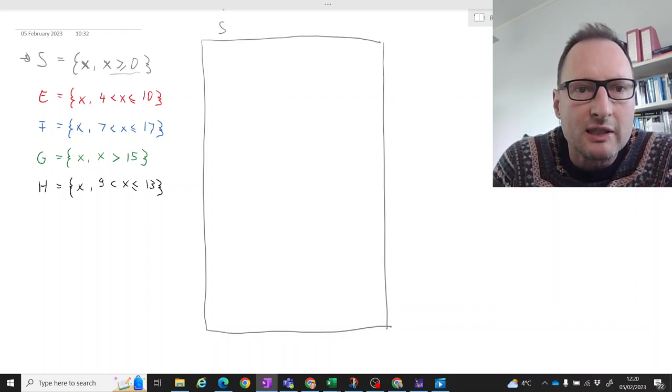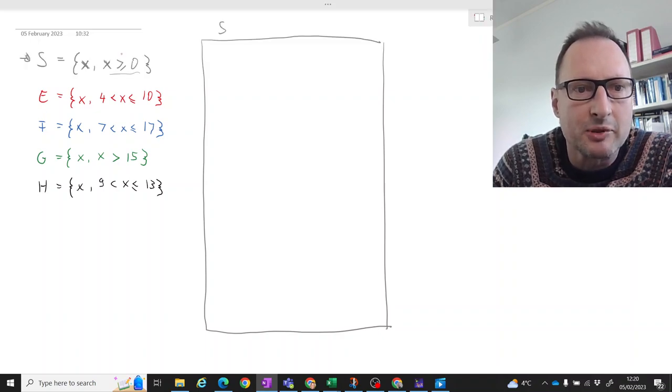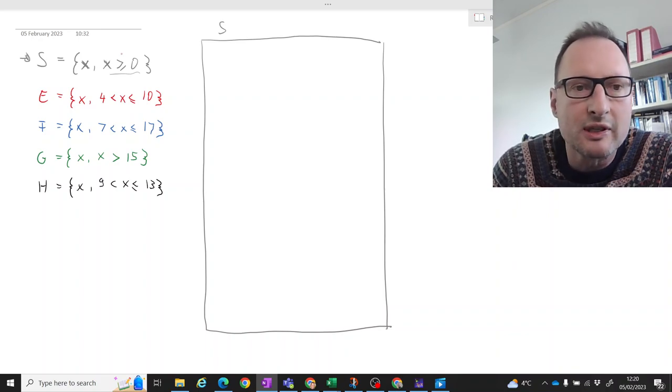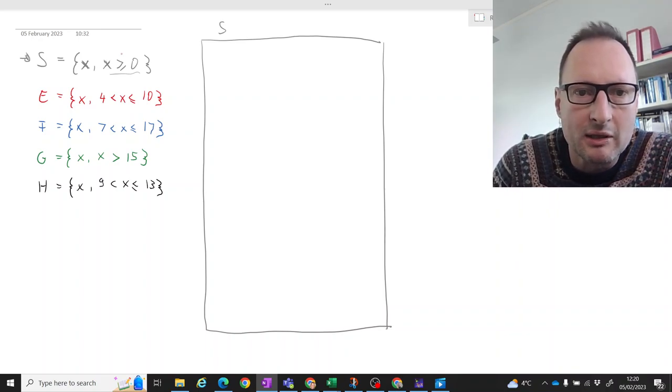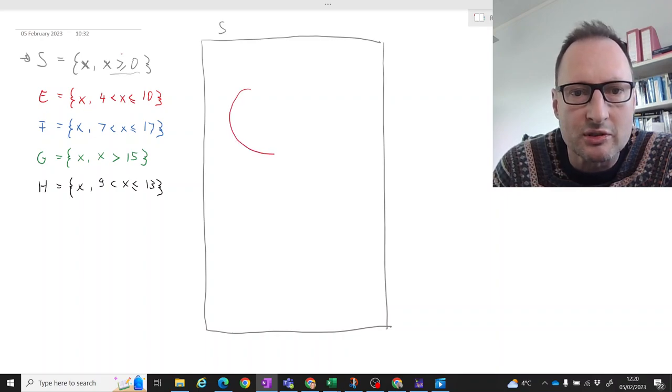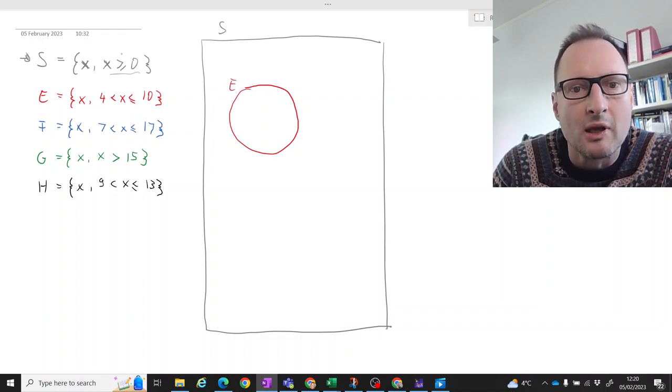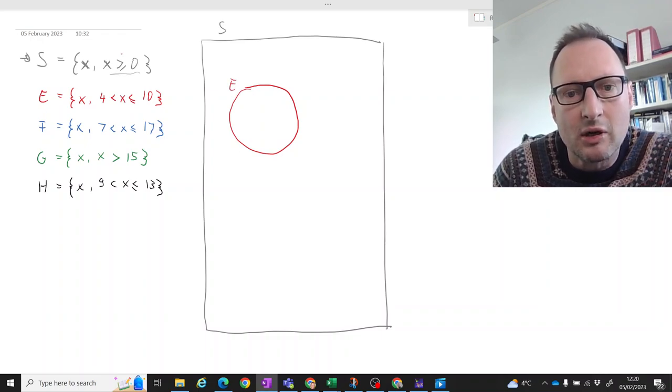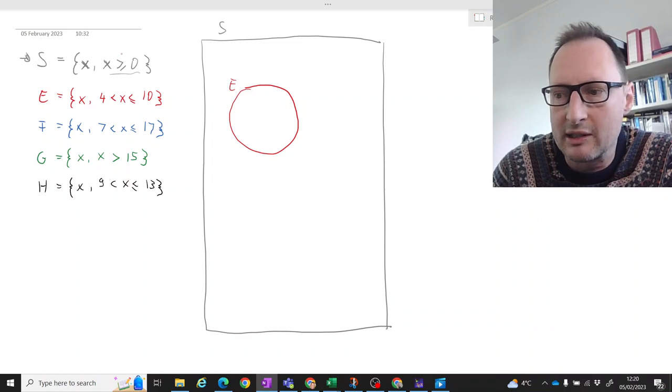So firstly, let's try and represent event E in that sample space. Well, E is what we call a subset of S. So we could just draw it anywhere here. It's just common that we represent that with circles. Okay, so that is E here. So just a subset of all the values in our sample space fall into event E. Only those between 4 and 10.